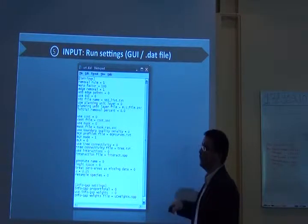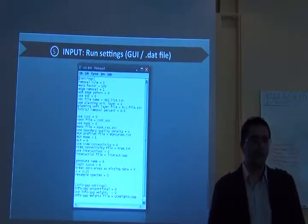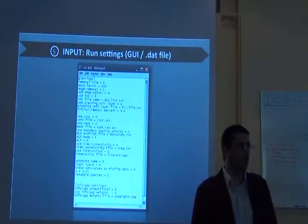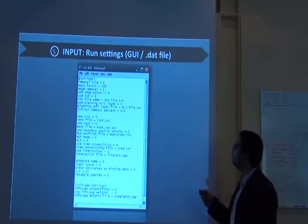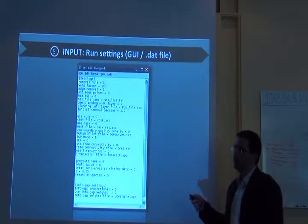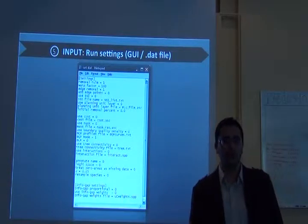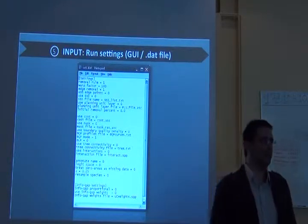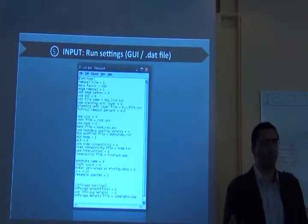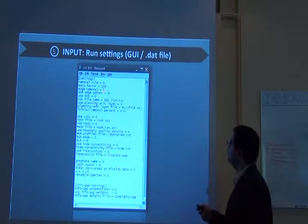This run settings will have information like this. What is the removal rule you're using? And that means what is the way that you're calculating marginal loss. So if you put, for example, one here, that would mean that you were using the core area zonation removal rule. If you put two, then it means you're using additive benefit function. Three, target based planning, and four, the other option.